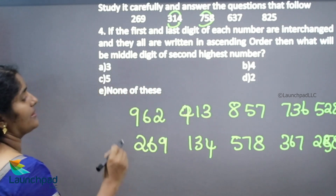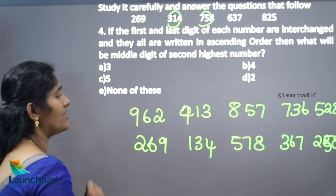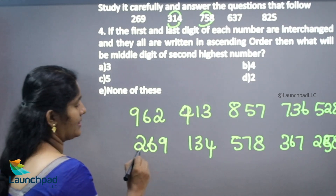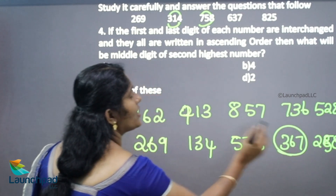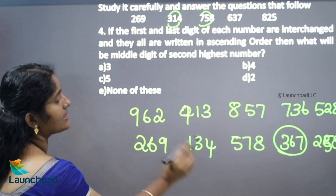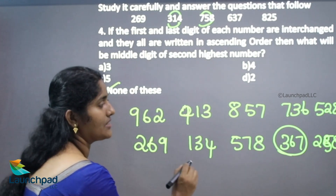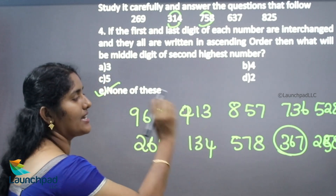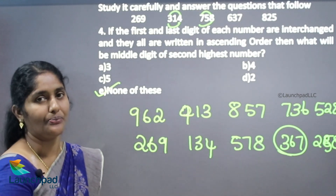After arranging in ascending order, the second highest number is 367. The middle digit of 367 is 6. However, 6 is not available in the options, so your answer is none of these. After arranging in ascending order, we take the second highest number and then identify the middle digit of that value. These are the different types of questions in your alphanumeric test. Thank you for watching.